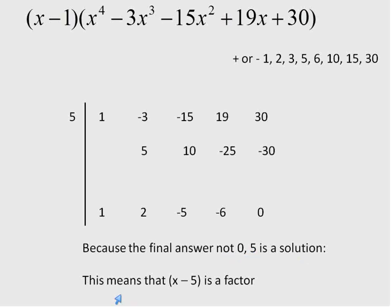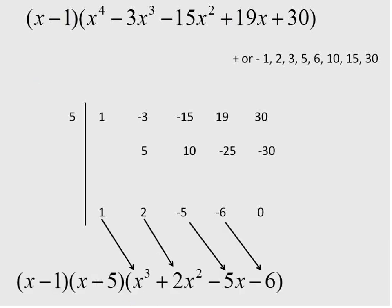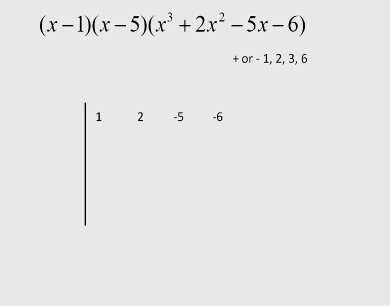What does that tell us? Well, if the answer is 0, 5 is a solution. Or in other words, x minus 5 is a factor. So I'm going to go ahead and write out my new factor, the next step of factoring. I have x minus 1 from before. Now I have x minus 5. And now I'm going to rewrite a new polynomial using these numbers as my coefficients: 1, and remember I dropped the exponent down to one lower number. So instead of x to the power of 4, I have x to the power of 3. Then 2x squared, negative 5x, and negative 6.